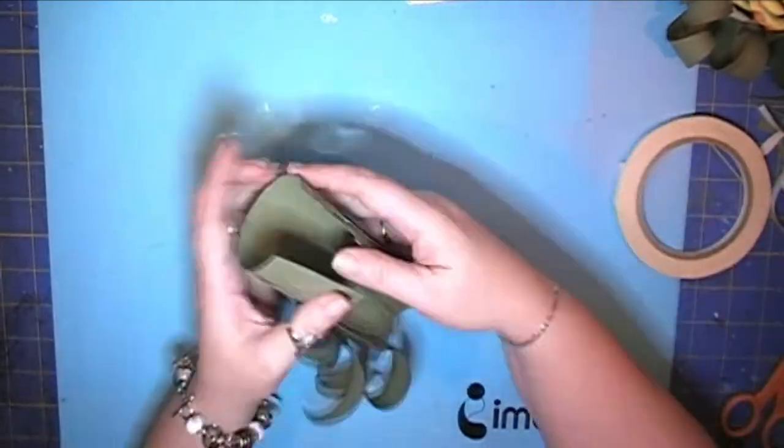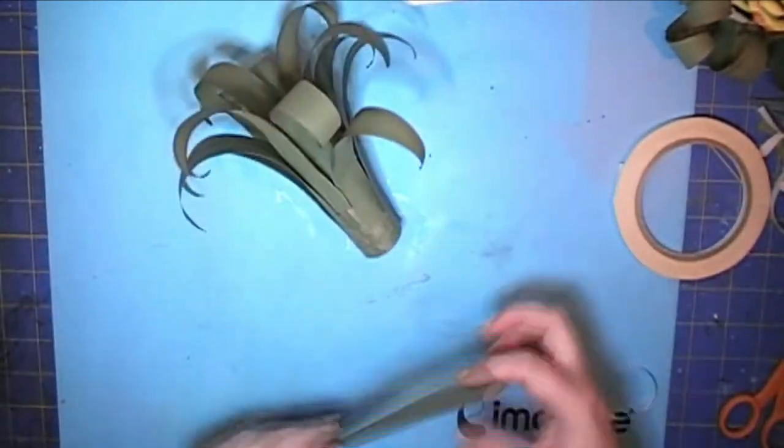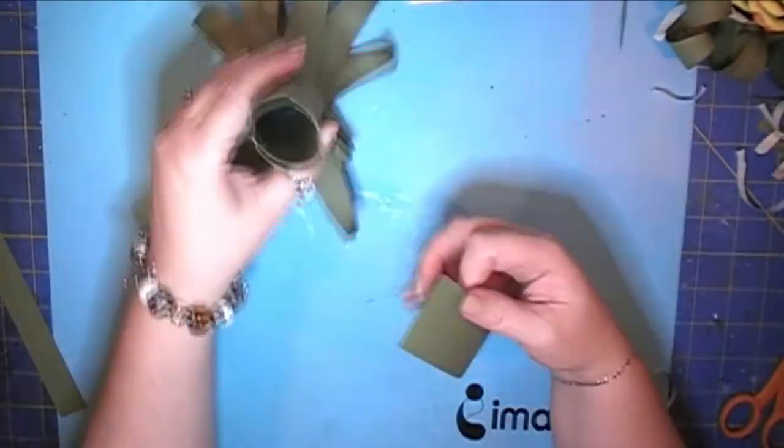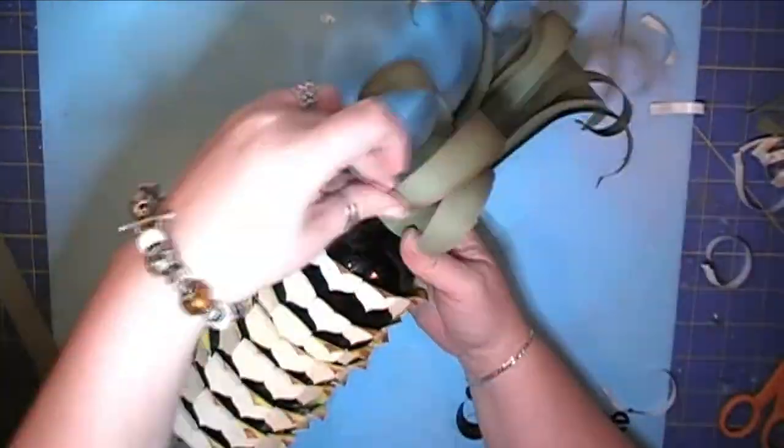Once you've got it put together, arrange the fronds however you like. I created a second collar to kind of go around and cover up any exposed edges from the individual fronds, and once it's on the bottle, there you go.